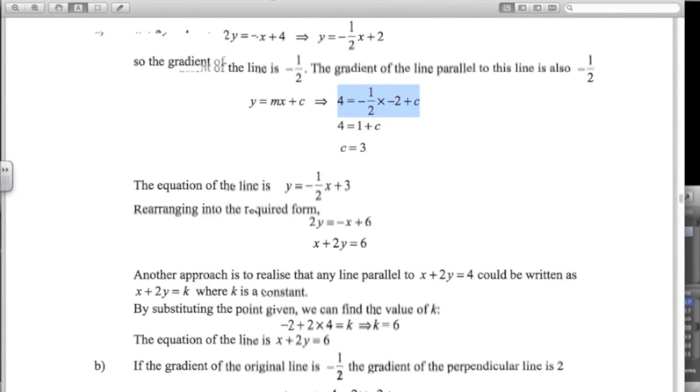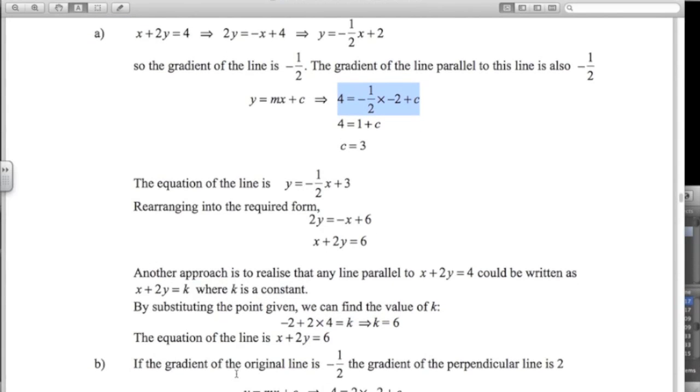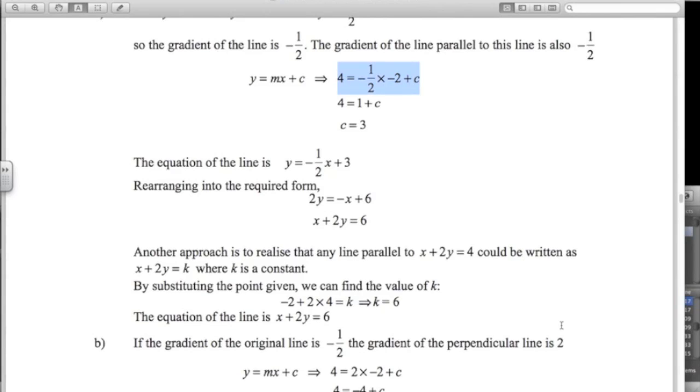Part b. It's the important one. If the gradient of the original line is negative 1.5, the gradient of the perpendicular line is 2. That's crucial that you know how to do that. So the equation of the line is y equals 2x plus c.